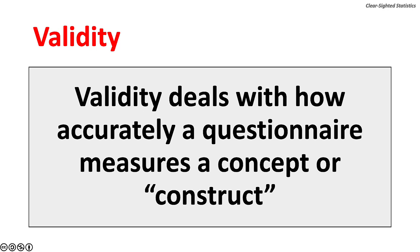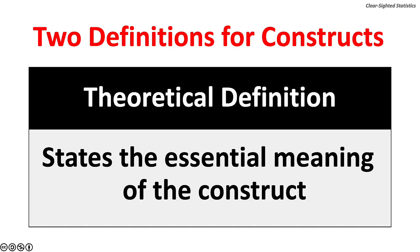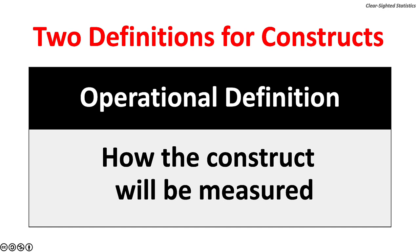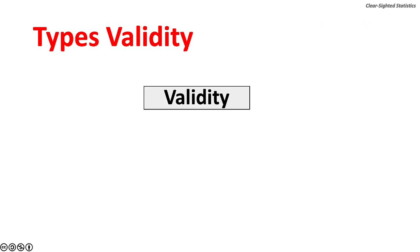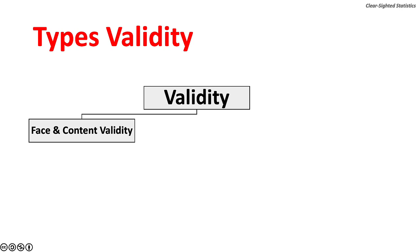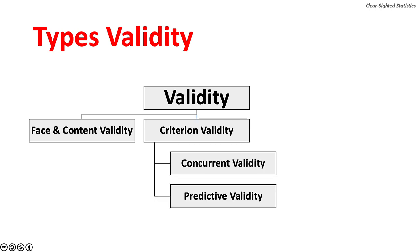Validity deals with how accurately a questionnaire measures a concept or construct. Questionnaires are often called survey instruments. Theoretical definitions state the essential meaning of a construct, while an operational definition describes how the construct will be measured. There are several types of validity. The lowest kinds are face validity and content validity. There are two types of criterion validity: concurrent validity and predictive validity.